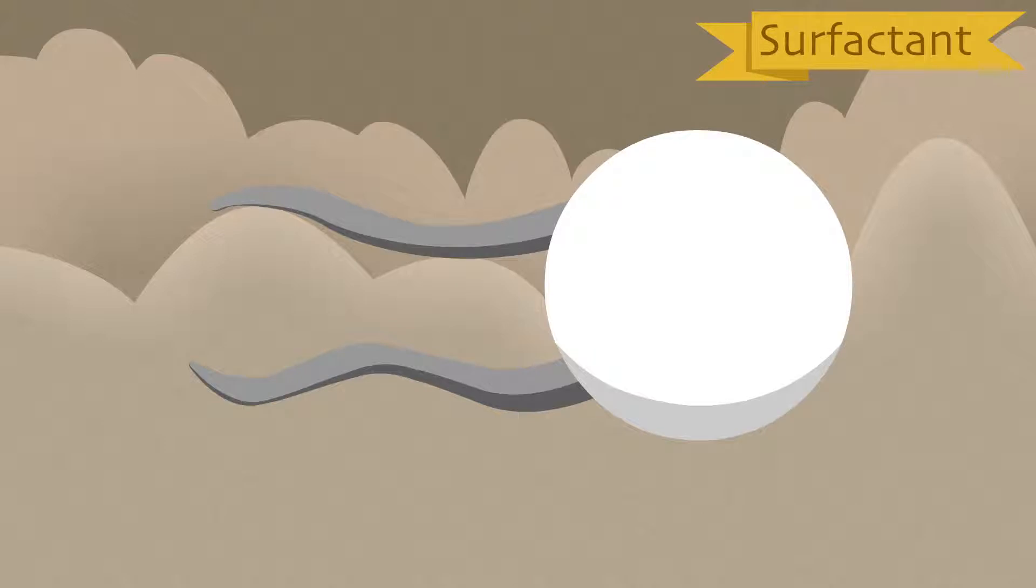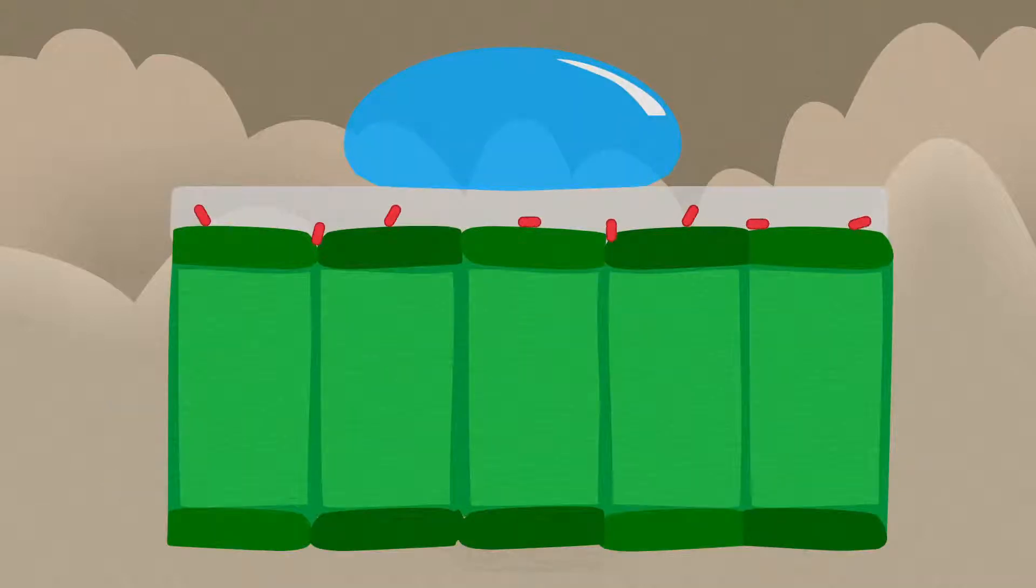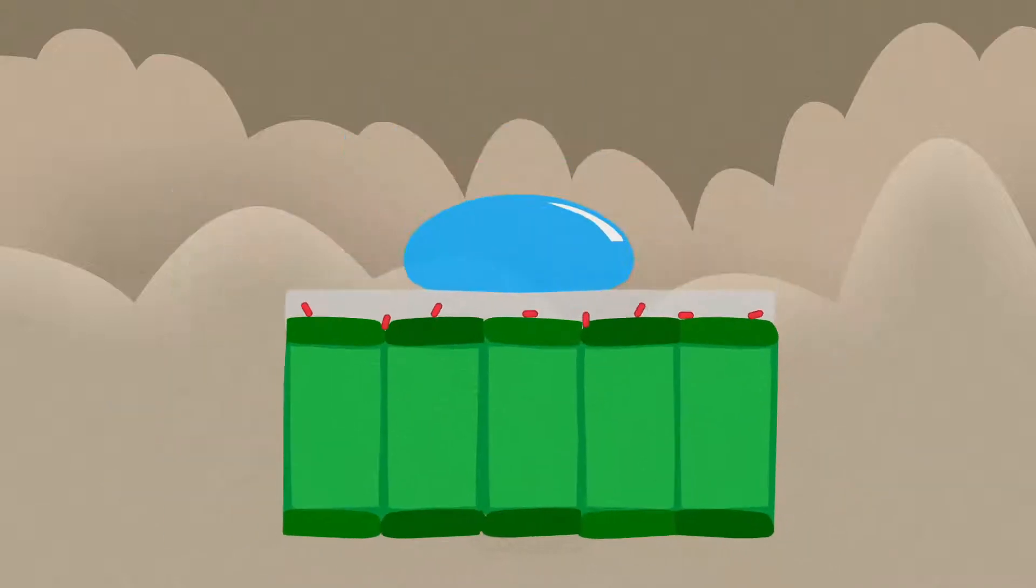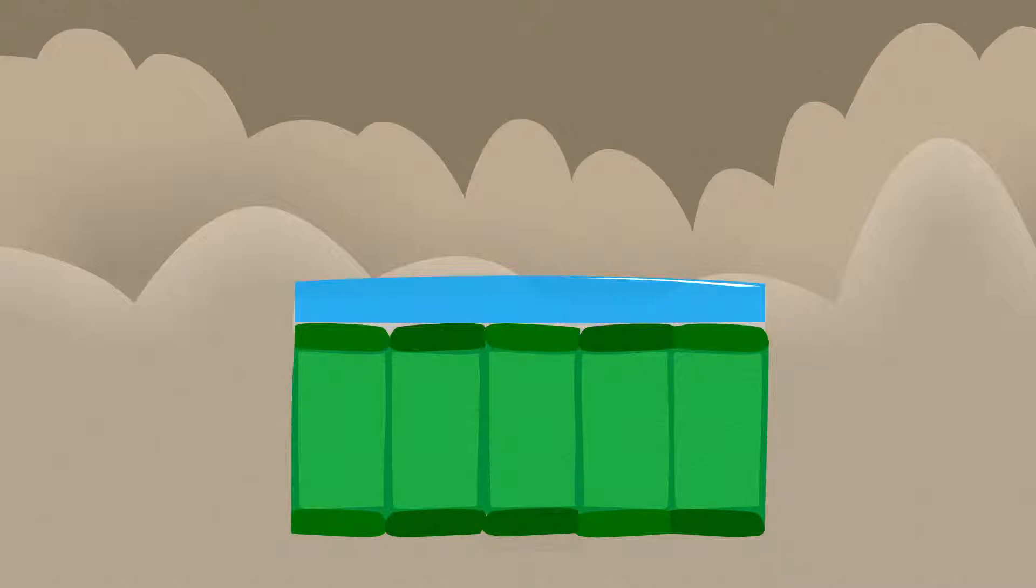How does this work? Surfactants have a polar and a nonpolar area on the same molecule. Polar forces bring the water containing the sanitizer closer to the leaf's surface.